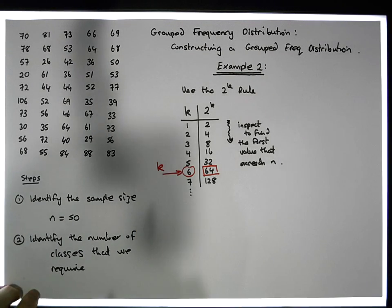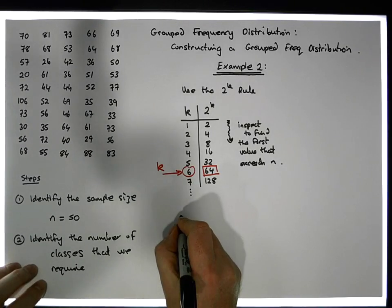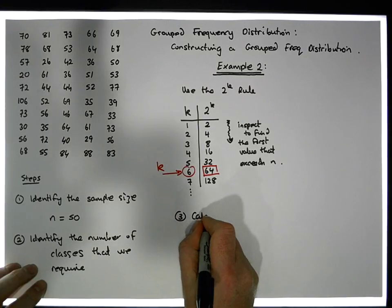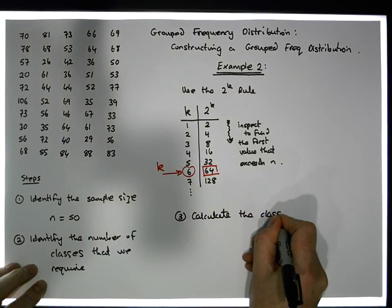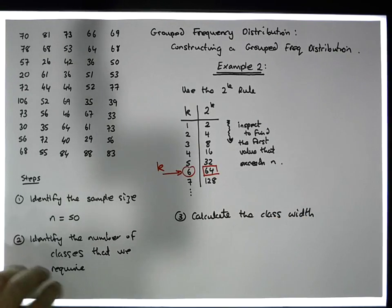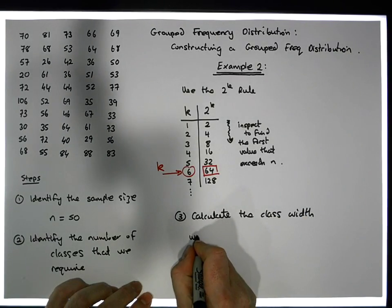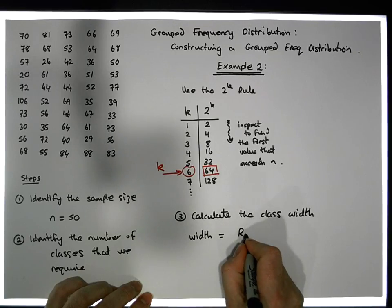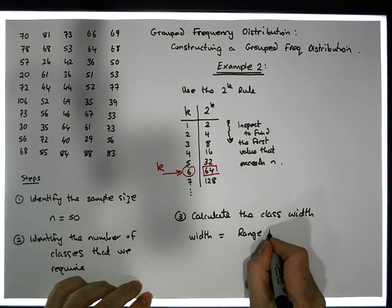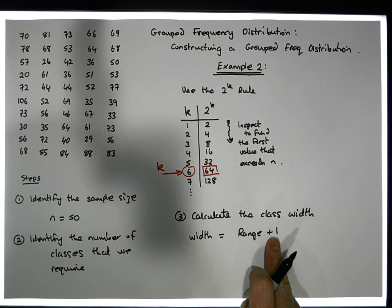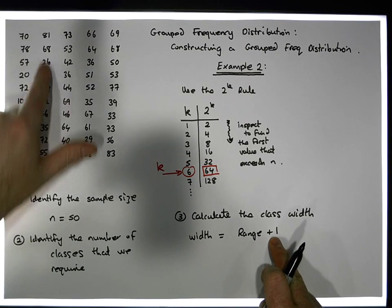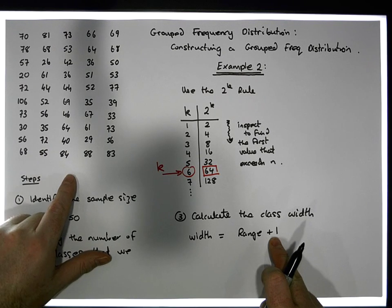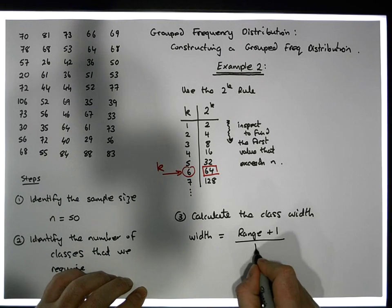Now that we know we need 6 classes, the next step is to identify the width of each class. Step 3 is to calculate the class width. The formula says that the width is equal to the range of the data set plus 1 — where 1 is the smallest unit with respect to the observations, the significance to which the observations have been reported — divided by k, the number of classes.